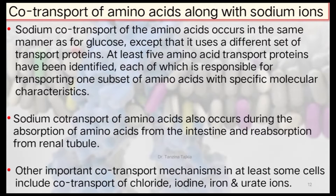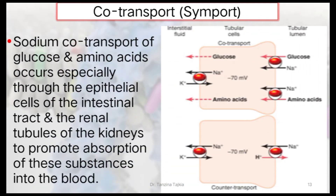Co-transport of amino acids with sodium ion occurs in the same manner as for glucose, except that it has a different set of transport proteins. At least five amino acid transport proteins have been identified, each responsible for transporting one subset of amino acids with specific molecular characteristics. Sodium co-transport of amino acids also occurs during absorption from the intestine and reabsorption from the renal tubule. Other important co-transport mechanisms include co-transport of fluoride, iodide, iron, and urate ions.